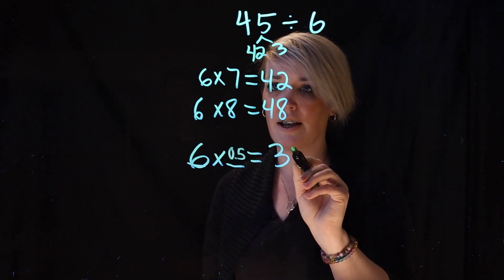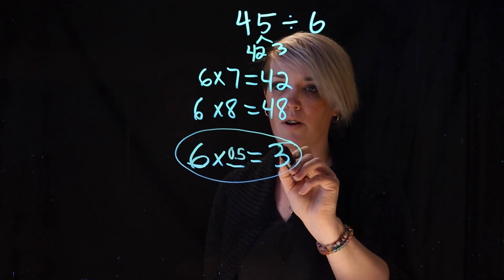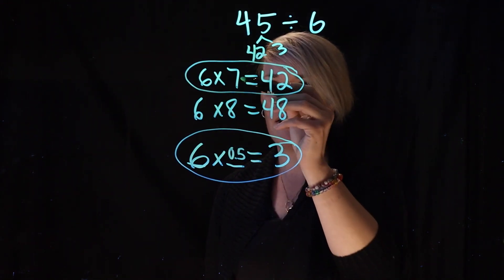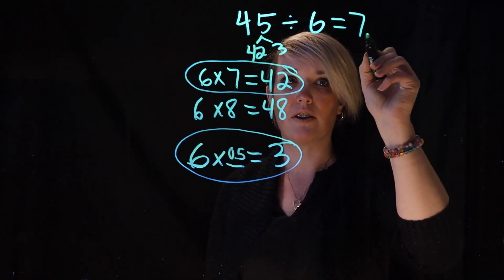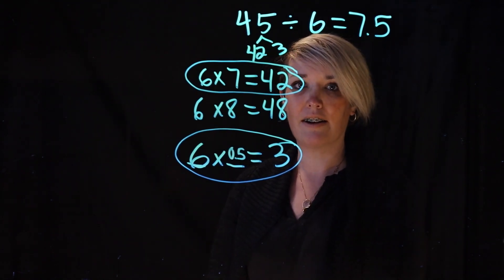So he said, to get his answer, he looks at this one and this one, and he just adds 7 plus 0.5 to get 7.5. Great idea.